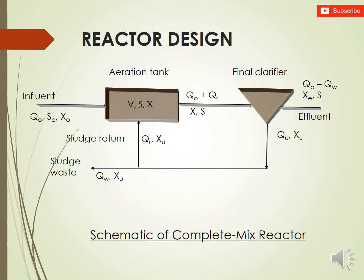First let's have a look at the main parameters involved in reactor design. As we can see here, these are the two components of the system: the aeration tank and the final clarifier. In the influent, Q is the flow, S₀ is the BOD of the influent, and X is the mixed liquor suspended solids from the influent. V is the volume of the aeration tank and final clarifier. This is the schematic of a complete mixed reactor, and later we will give more details on these parameters and the equations derived.